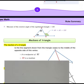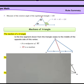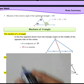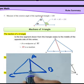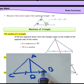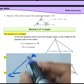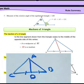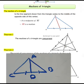Medians of a triangle. The median of a triangle is the line segment drawn from a vertex to the midpoint of the opposite side. For example, in triangle ABC, if line segment ED bisects CB at point D, then ED is called the median. The median joins the vertex to the midpoint of the opposite side.